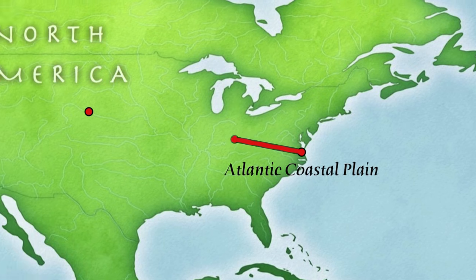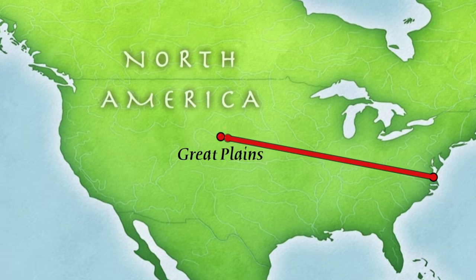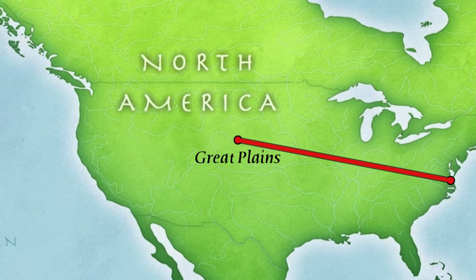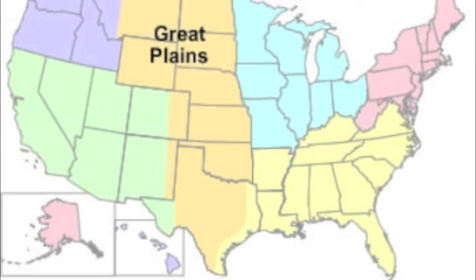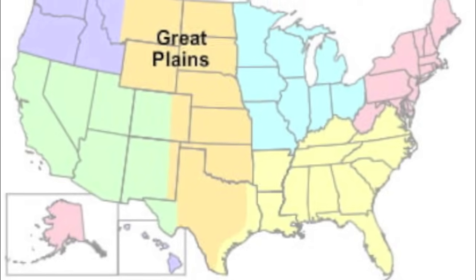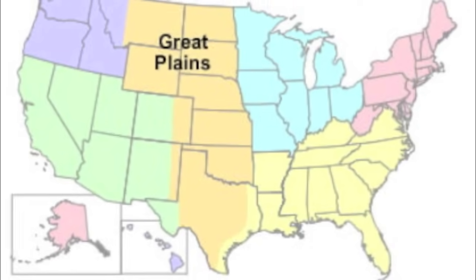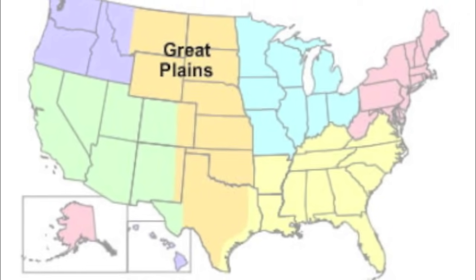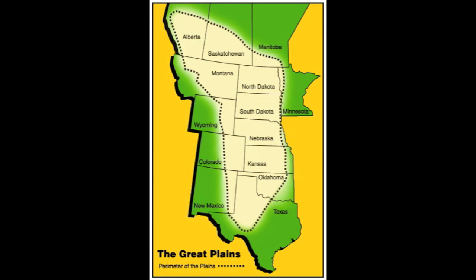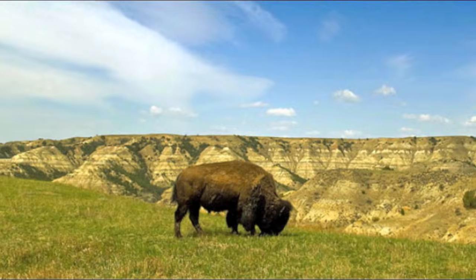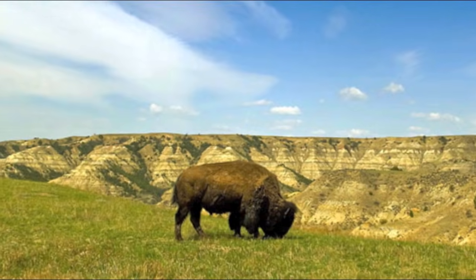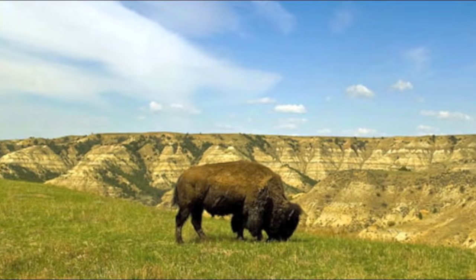The Great Plains are a flat area in the middle of the United States. They are located on the western part of the interior plains. It consists of grasslands with no trees.